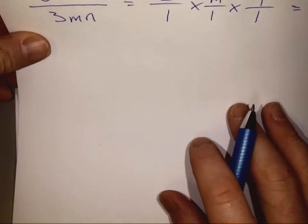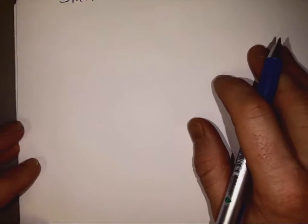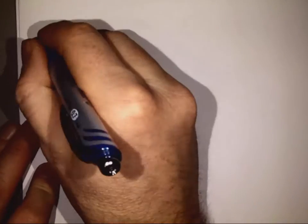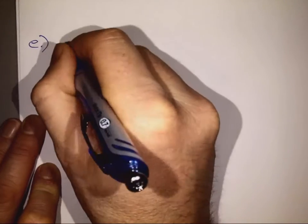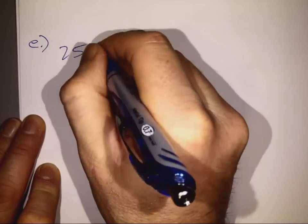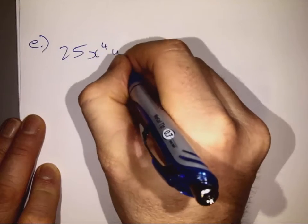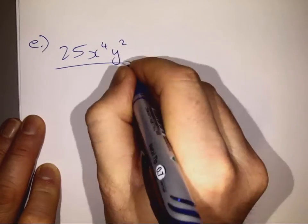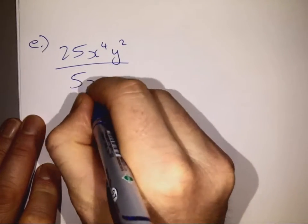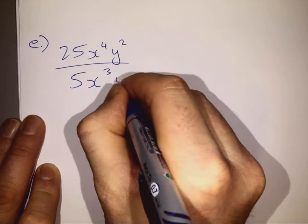And next up, we have Part E. 25x to the power of 4 times y squared, all over 5x cubed times y.